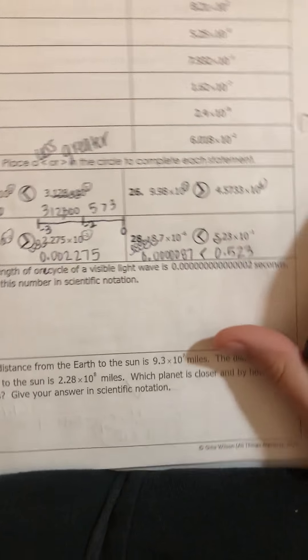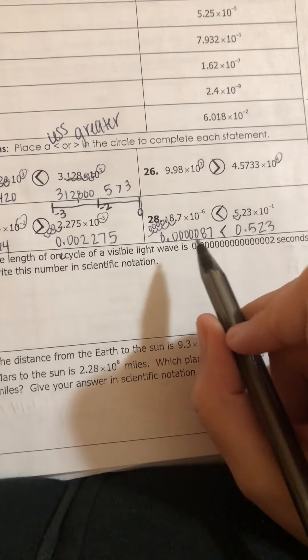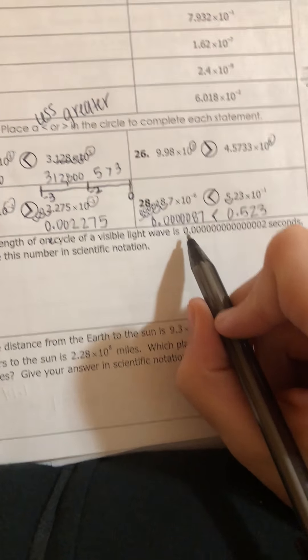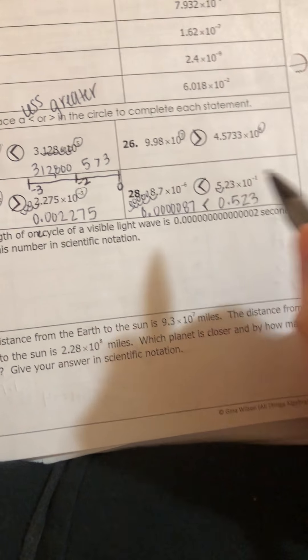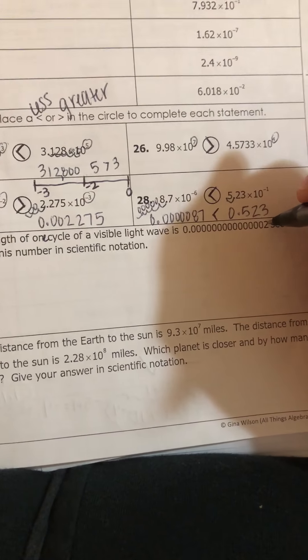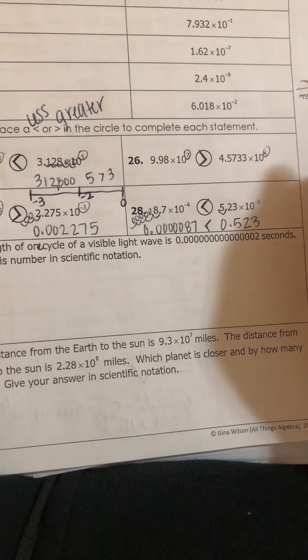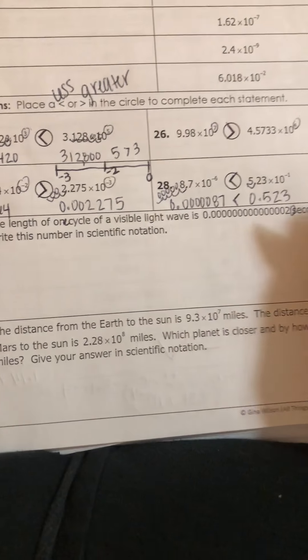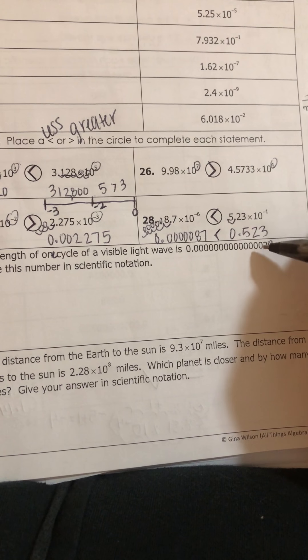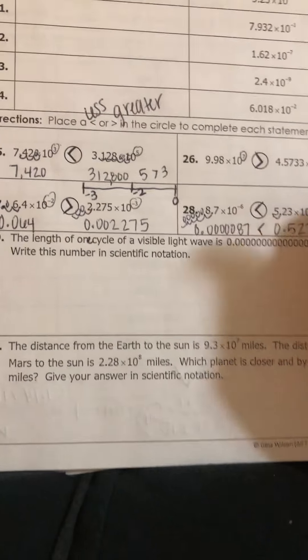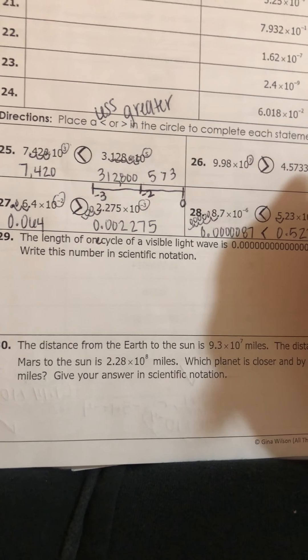Okay. And the directions say to write it in scientific notation. So remember the goal when converting is to get the decimal point between the first two non-zero digits. So there's only one non-zero digit here, but really there's a zero after there. And as long as the first number is not zero, the second one can be. So we want to get it after the two.